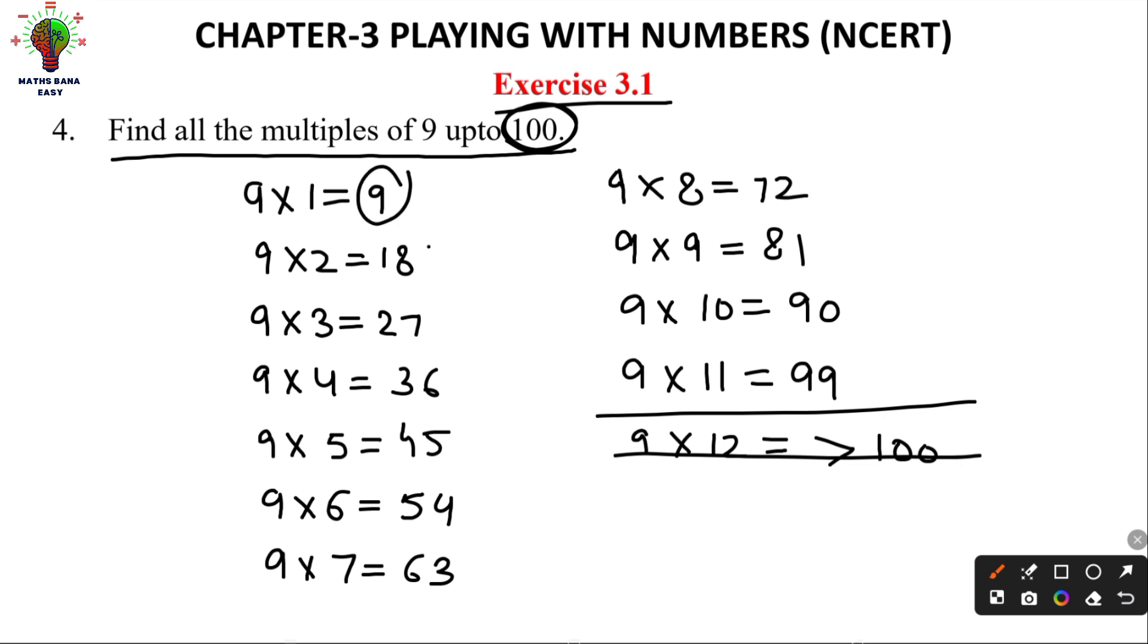What are the multiples of 9 up to 100? 9, 18, 27, 36, 45, 54, 63, 72, 81, 90 and 99. This is the answer.